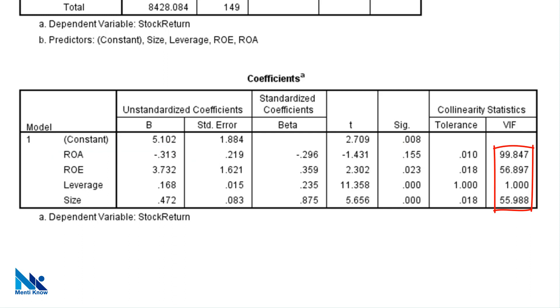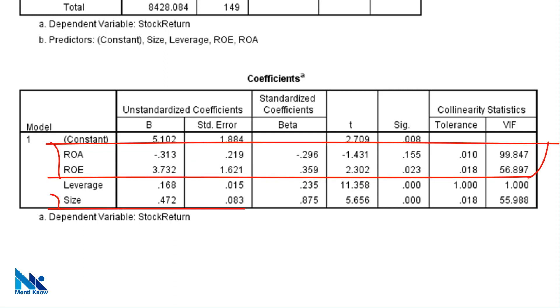Anyway, if we look at our VIF values, we can see 3 very high VIF values. Look at these VIF values for ROA, size and ROE. They are greater than 5 indicating serious multicollinearity in our regression model.